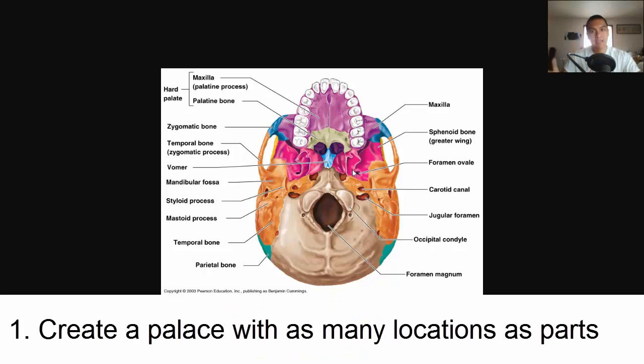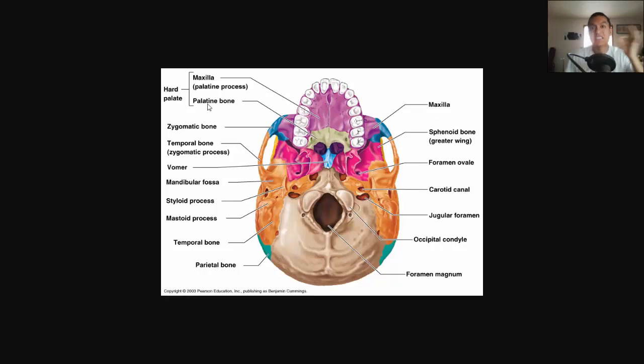The first thing you need to do is create a memory palace with as many locations as you have pieces of information. For this diagram we have 16 different parts, so we need a memory palace with 16 different locations.